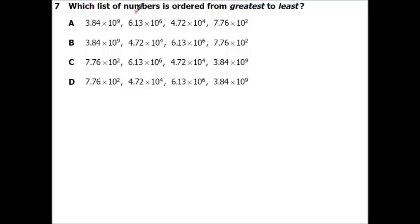Alright, which is ordered from greatest to least? So these all have the same thing. But the easiest way to compare scientific notations is just look at the exponents. So if we want greatest to least, you just need one with the biggest. So we got 9, 6, 4, 2. This one has 9, 4, 6, 2. So that's not right because 4 is smaller than 6. This is 2, 6, 4, 9. Nope. And 2, 4, 6, 9. So the only one because 9, 6, 4, 2. So if you just look at your exponents for the scientific notation, those will tell you how to do greatest to least.